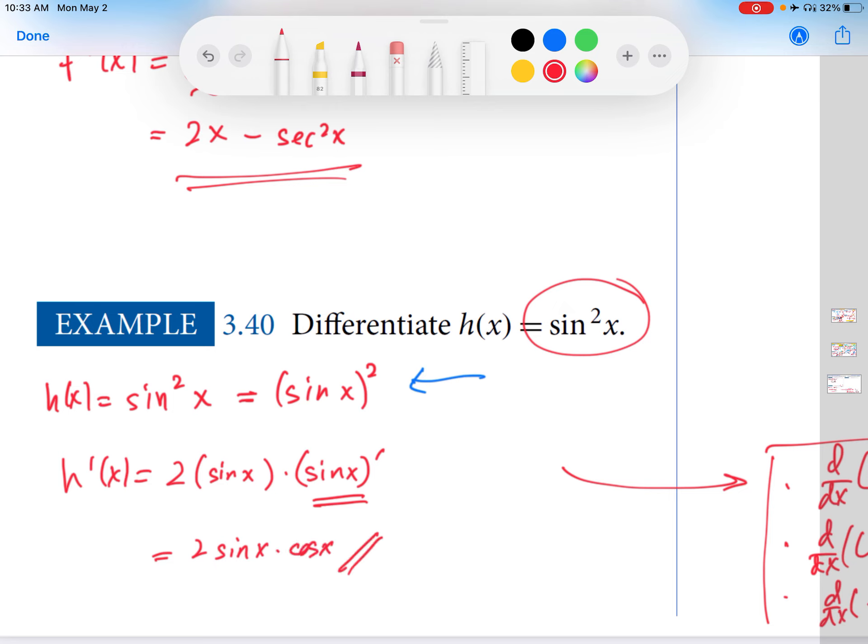Now, this is the answer in the sense that this is the end of the calculation. However, you could also rewrite this in a different way by using the fact that 2 times sine x times cosine x is sine of 2x.